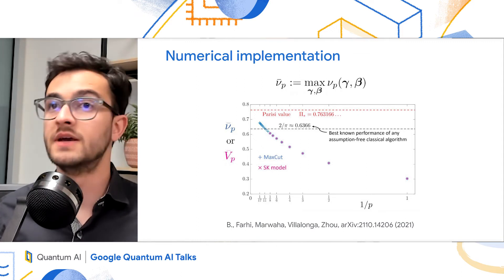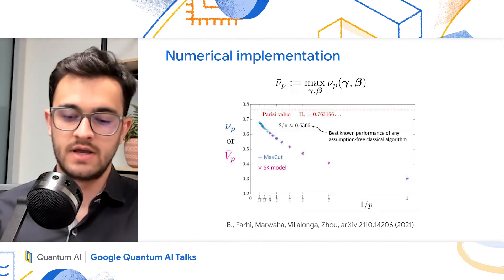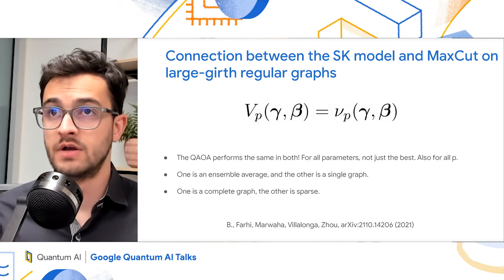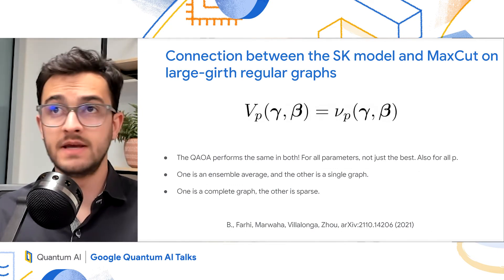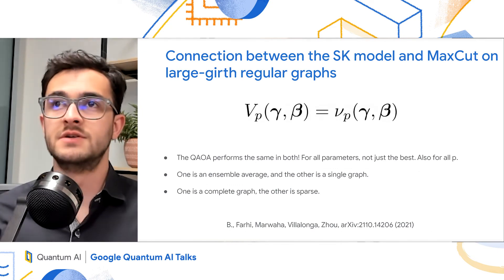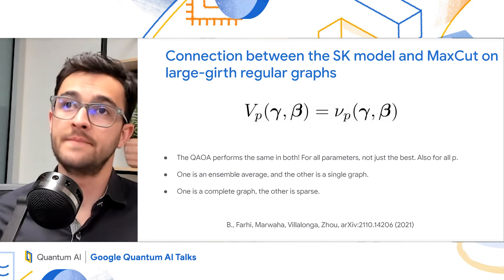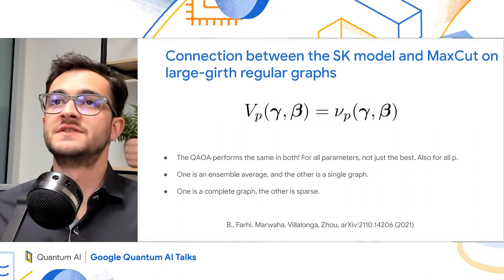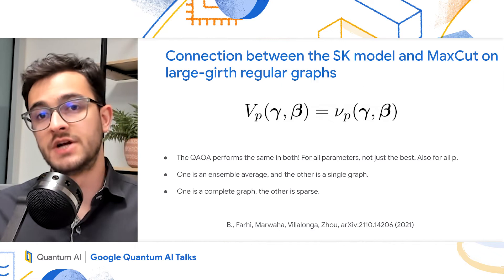So always nu_p bar seems to be v_p bar. So that begs the question, is that true for all p? Is that true for all parameters? And we answer that question positively. So we show that for every p, every gamma, and every beta, v_p equals nu_p. That is, the performance of the QAOA on the SK model matches its performance on MaxCut for large-girth regular graphs.